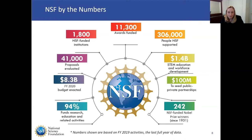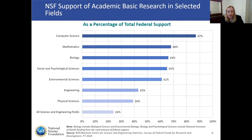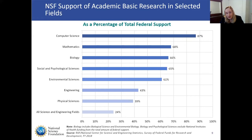Another way to look at NSF's impact is to see what percentage of academic basic research we support by field. For computer science, for instance, 87% of academic basic research is supported by NSF. And on down the line, you can see the portion of federal research dollars attributed to NSF. While $8.3 billion is not as large as some other R&D investments across the federal government, there's still a significant portion of academic basic research that is in NSF's wheelhouse.